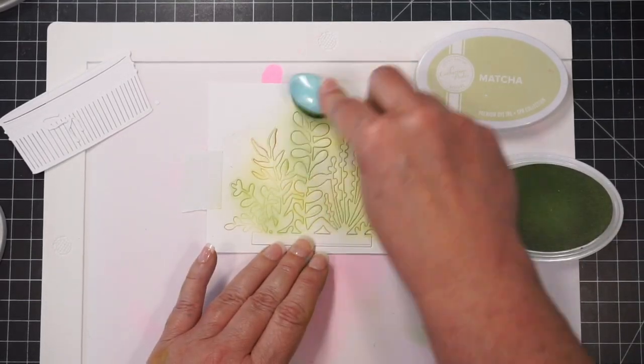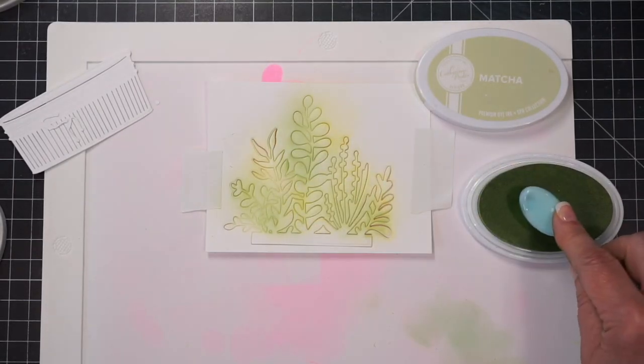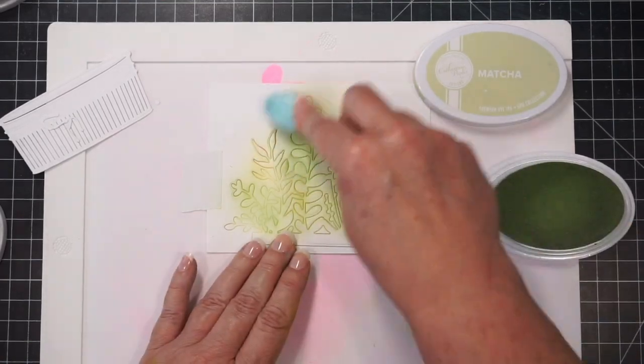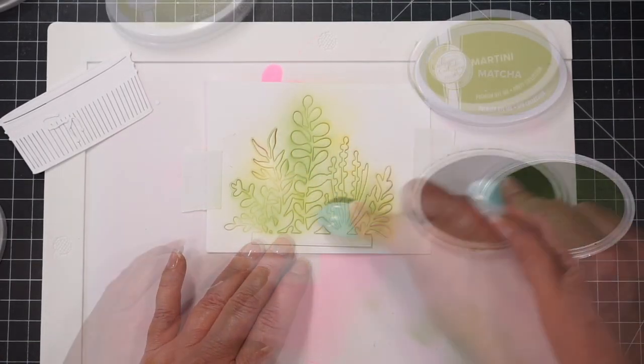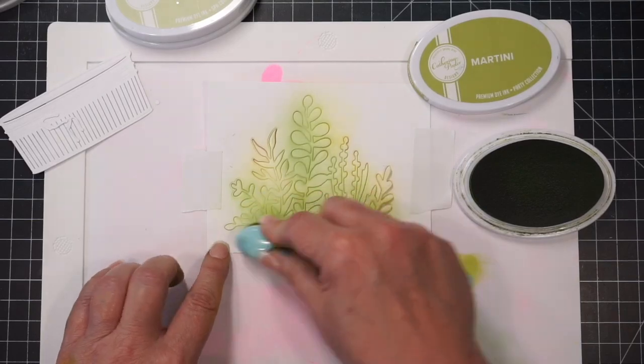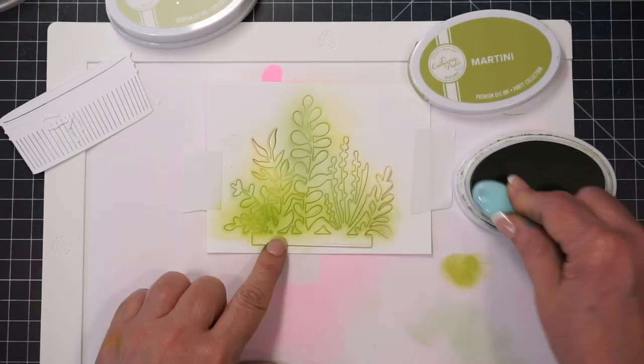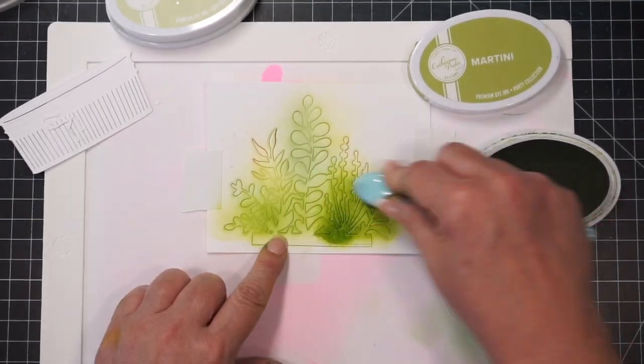What I'm doing here is I want you to know if ink smooshing is not for you, then I'm just adding a few frames in here of how I would go about ink blending this die cut piece.